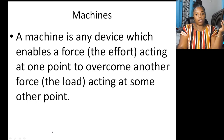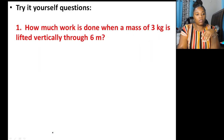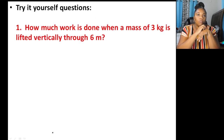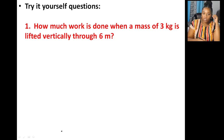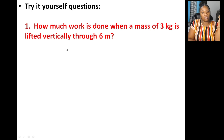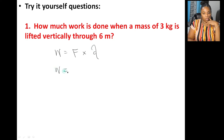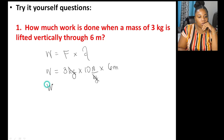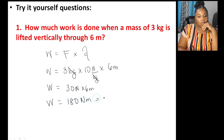Question: How much work is done when a mass of 3 kg is lifted vertically through 6 meters? Work = force × distance. Convert mass to newtons: 3 kg × 10 = 30 N. Work = 30 N × 6 m = 180 newton-meters = 180 joules.